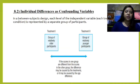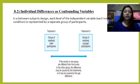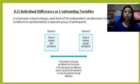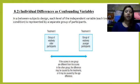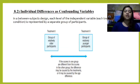Regarding individual differences as confounding variables: in a between-subject design, each level of the independent variable or treatment condition is represented by a separate group of participants. For example, if treatment one has a group of relatively older participants while treatment two has a group of relatively younger participants, if the scores differ between groups, the difference may be caused by the treatment or it may be caused by the age differences.